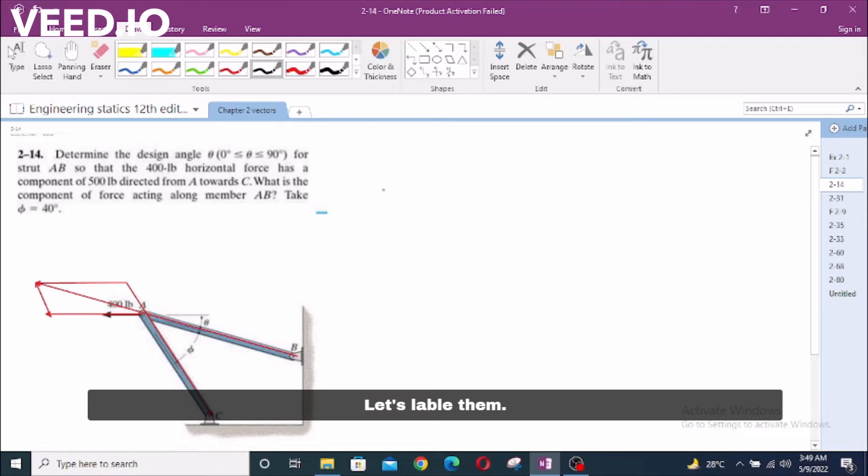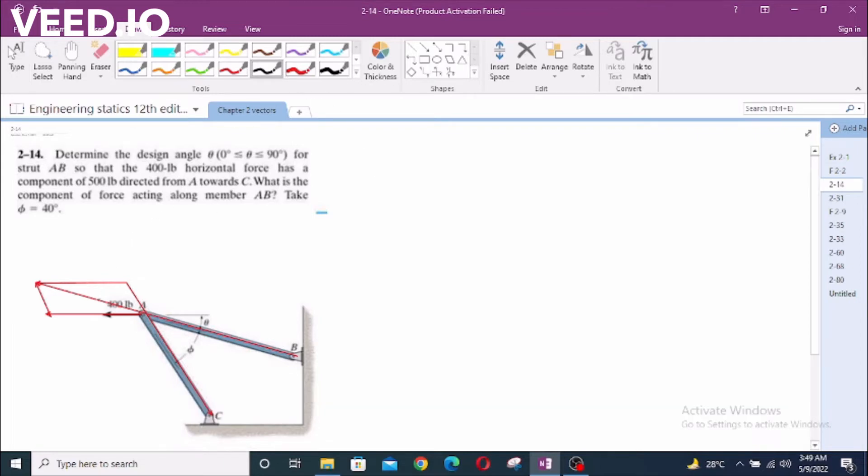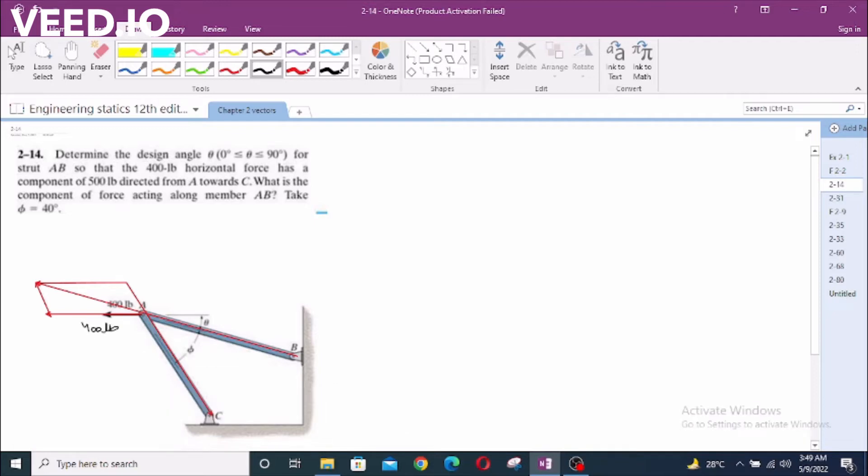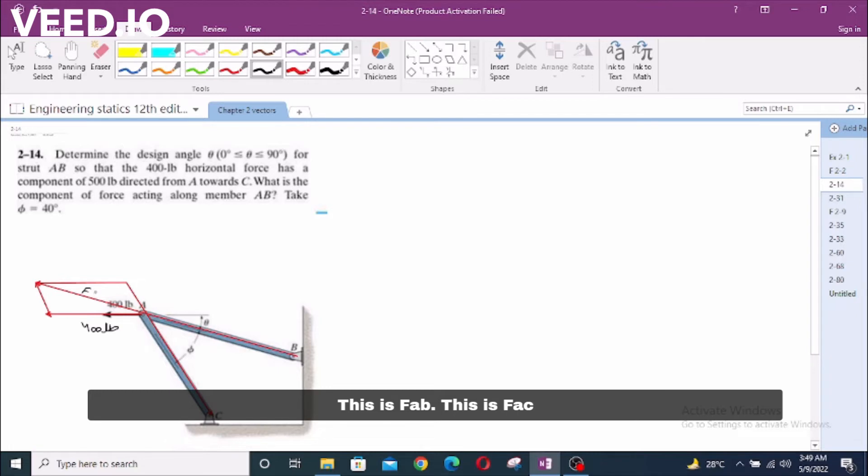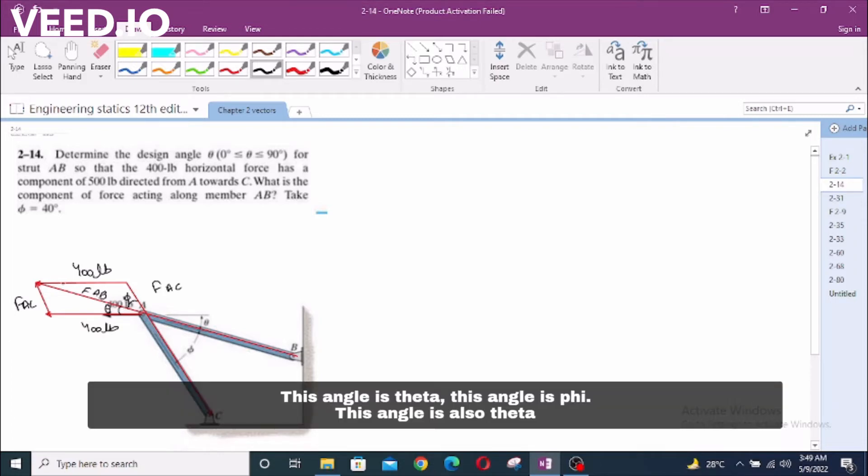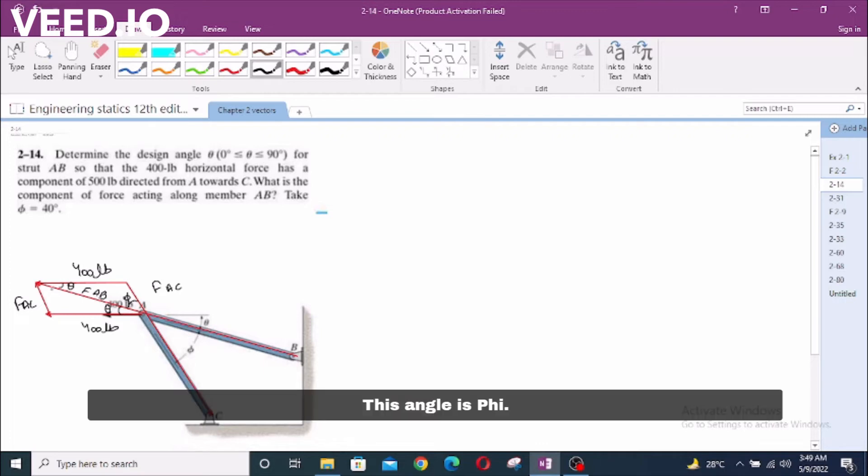Let's label them. Now this is 400 pound component. This is 400 pound component FAC. Let's call this angle theta, this angle phi. This angle is also theta. This angle is phi. Let's call this angle alpha. This angle alpha.